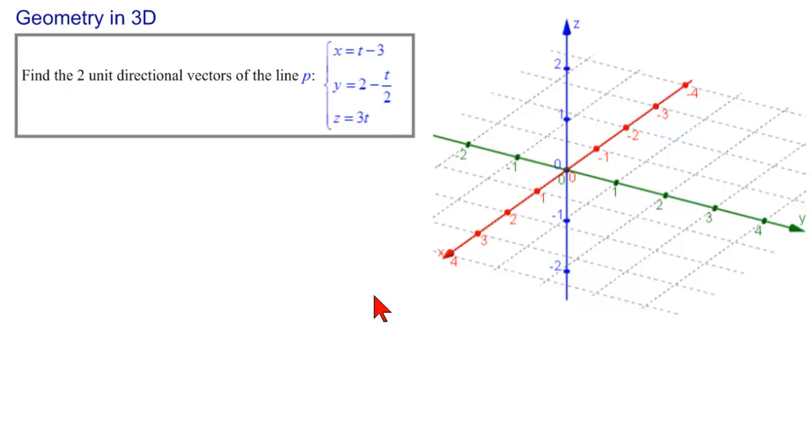Now, we remember that a line in parametric form is determined by a point and a parallel directional vector. Its formula is this, where we have coordinates of the point and the components of the parallel directional vector. So, the first thing we're going to do is to organize this in this form.